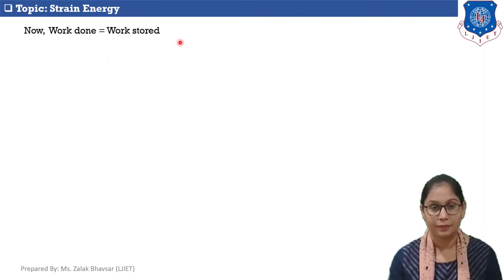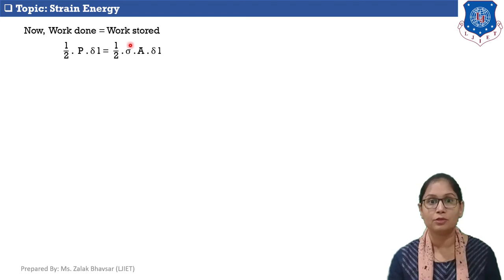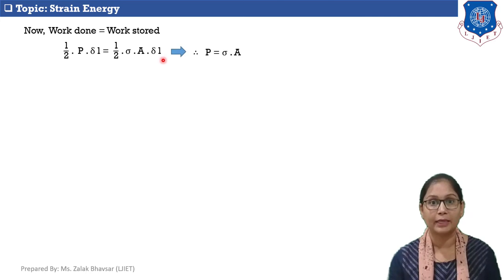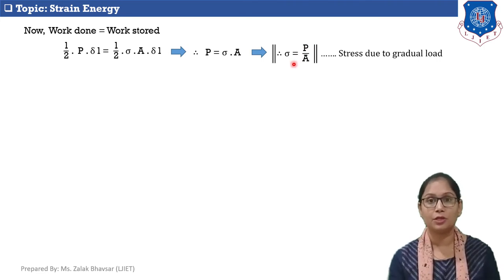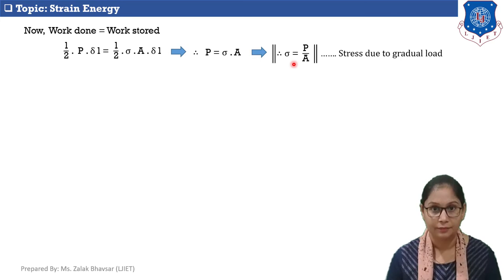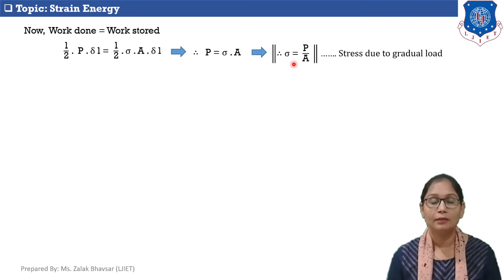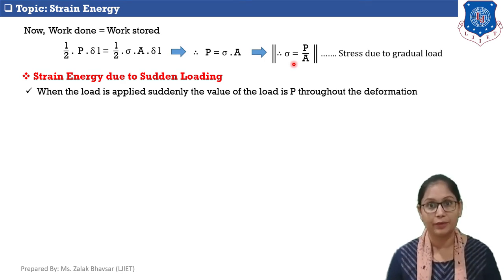Since work done equals work stored, from equations 1 and 2 we get: one half P into delta L equals one half into sigma into A into delta L. Therefore P equals sigma·A, and sigma equals P by A. This is the equation for stress when the applied load is gradual.